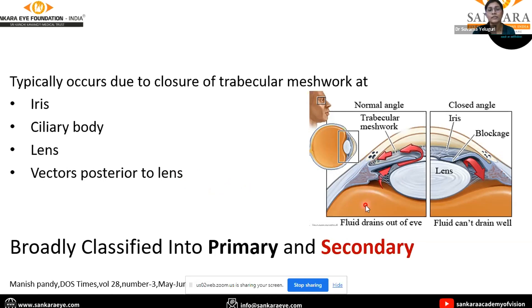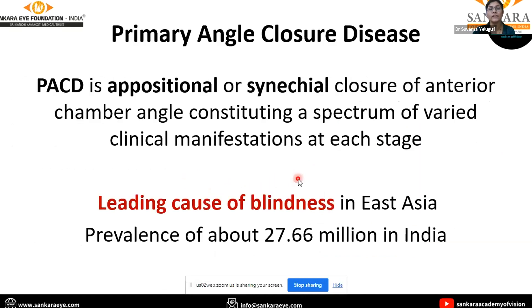Hence, angle closure is broadly classified into primary and secondary. Coming to primary angle closure disease — it is an oppositional or synechial closure of the anterior chamber angle, constituting a spectrum of varied clinical manifestations at each stage. It is the leading cause of irreversible blindness in East Asia, with a prevalence of about 27.66 million in India.